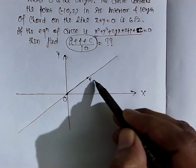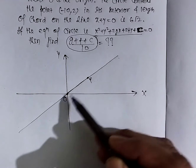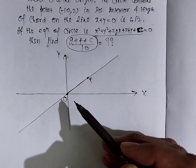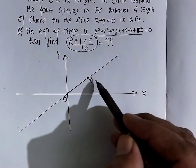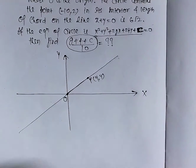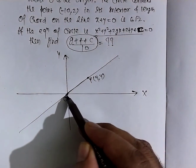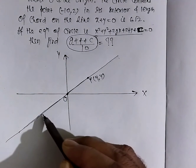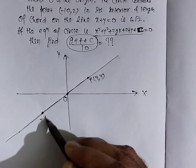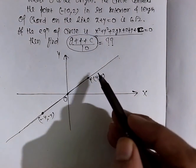Since P lies on y = x, its coordinates are of the form (t, t). Setting the distance from the origin equal to 4√2, we get t = 4, so P = (4, 4). But P could also be at (-4, -4), since that also has distance 4√2 from the origin.